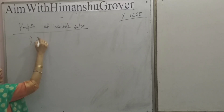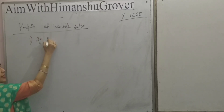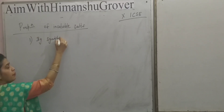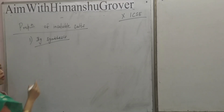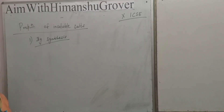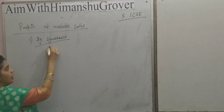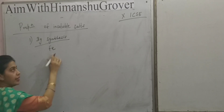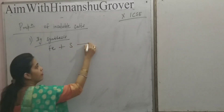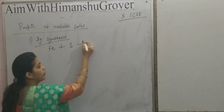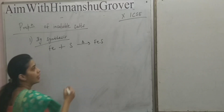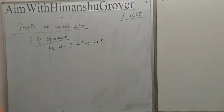The first method is by synthesis, that is by direct combination of two elements. When they are heated together, an insoluble salt can be prepared. For example, when iron and sulphur are heated together, it forms iron sulphide, FeS, which is an insoluble salt.